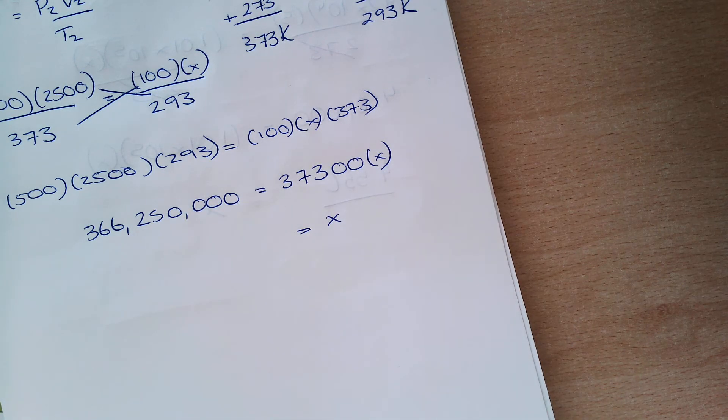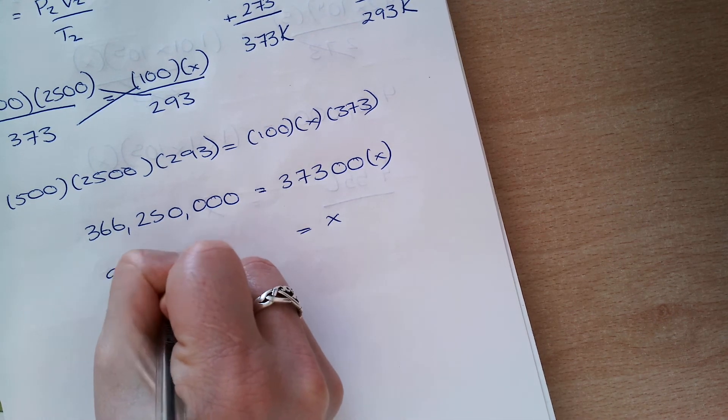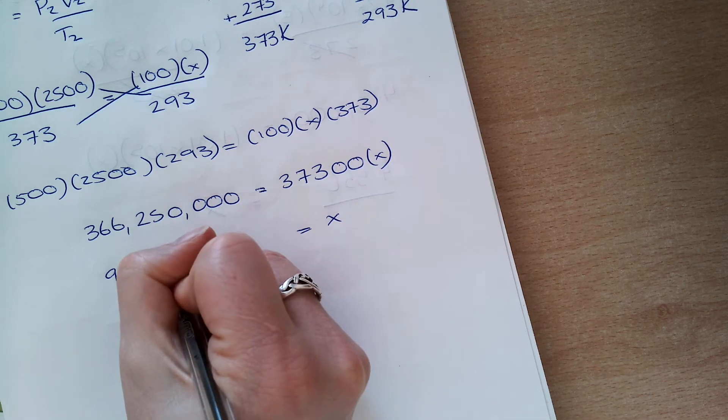So, to get 1X, I have to divide this side by 373,000, which means I need to divide this by 373,000. And that gives me an answer of 9819.035.